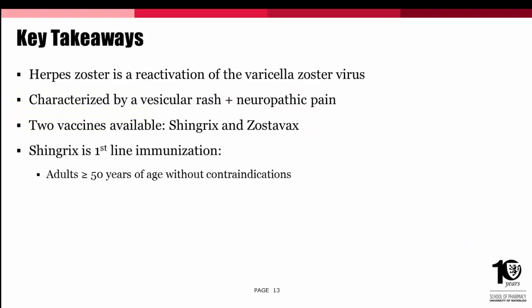To summarize, herpes zoster is a reactivation of the varicella zoster virus, which primarily manifests as chickenpox. It is characterized by a vesicular rash with associated neuropathic pain, and its most frequent complication is post-herpetic neuralgia, which can be significantly debilitating. There are two vaccines available to immunize against herpes zoster: Shingrix and Zostavax. Due to its efficacy and immunogenicity, Shingrix is considered first-line in individuals aged 50 years or older without contraindications, including those without a history of varicella infection, those that have had Zostavax immunization, those that have had a previous shingles episode, and immunocompromised individuals on a case-by-case basis.